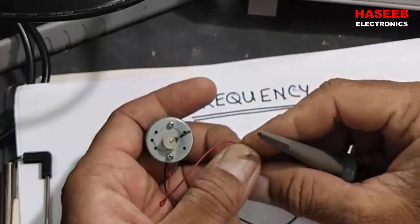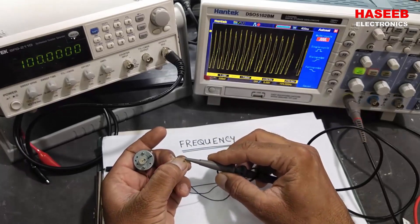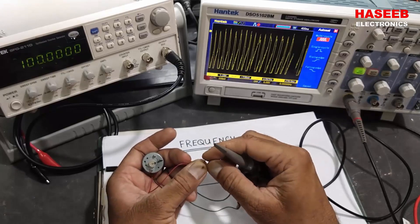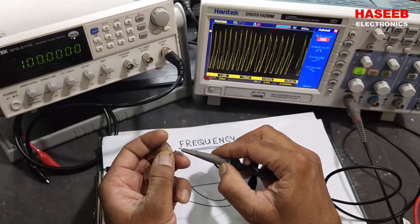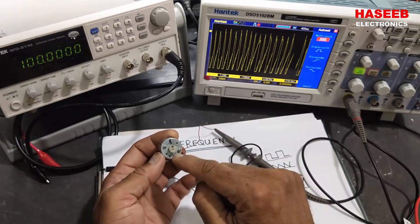Basically this motor or this generator has a permanent magnet set here inside that will make north and south. When we move any conductor in the magnetic field it will generate voltage when we move the...